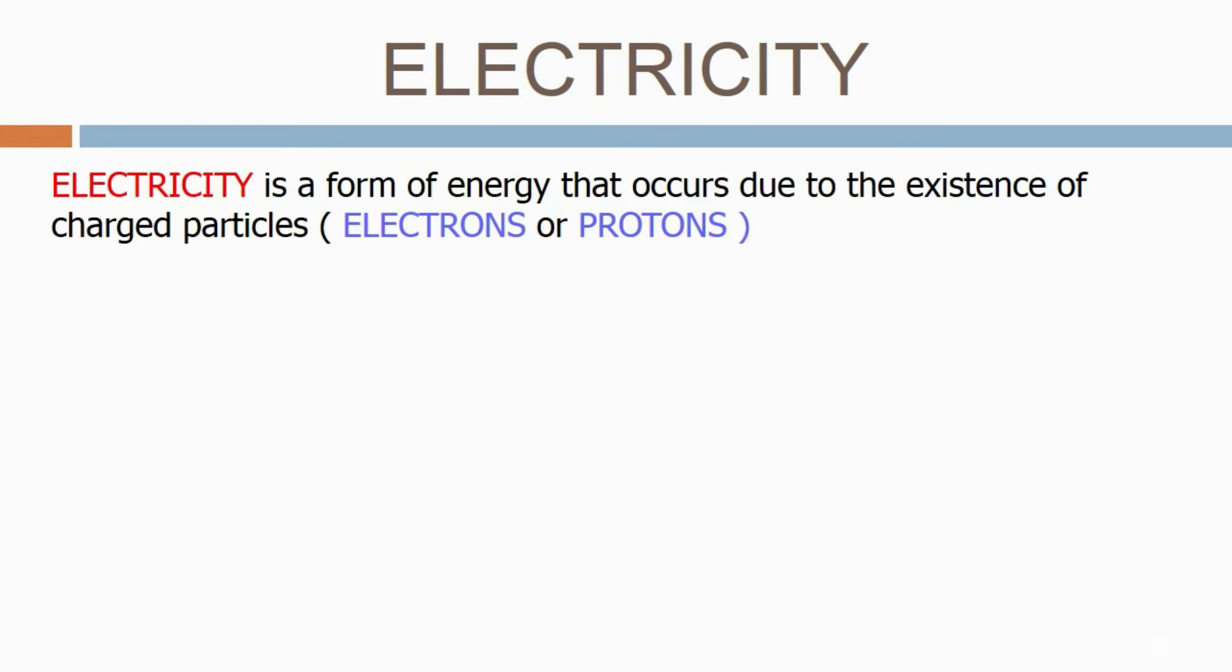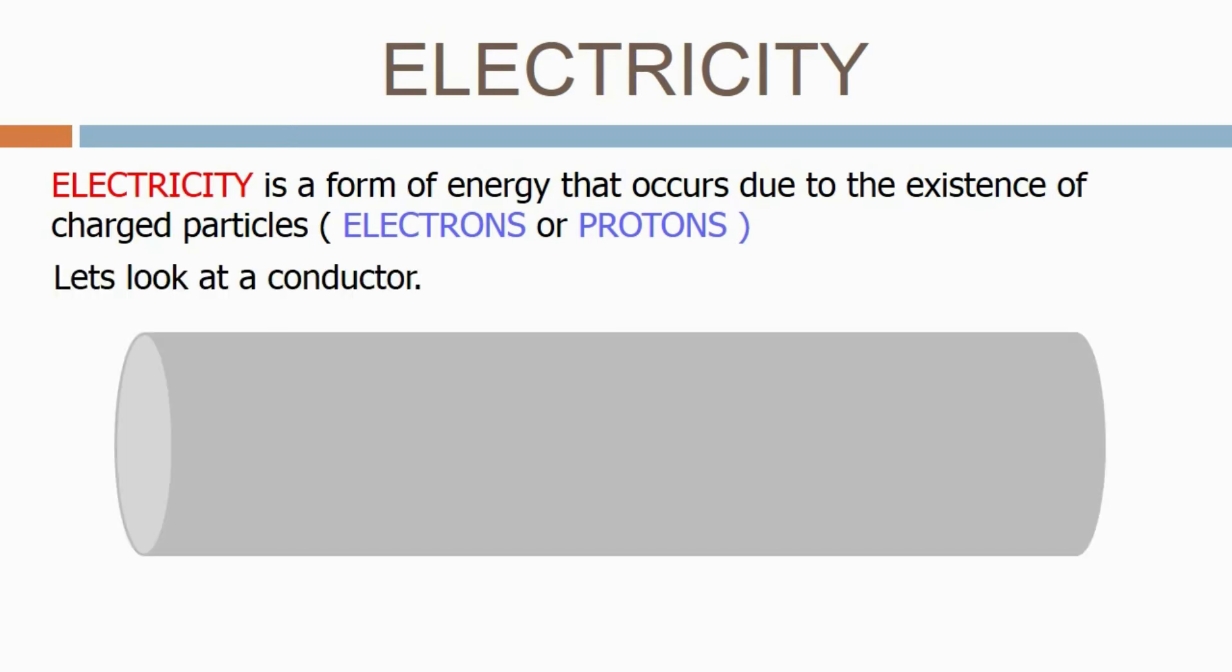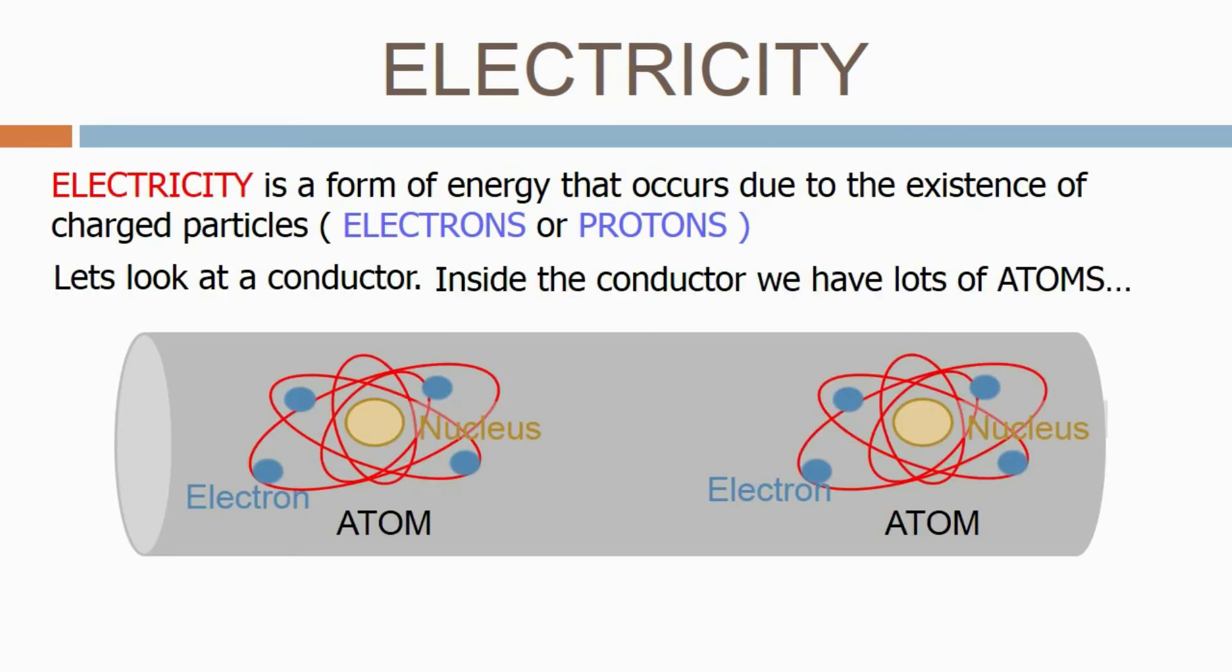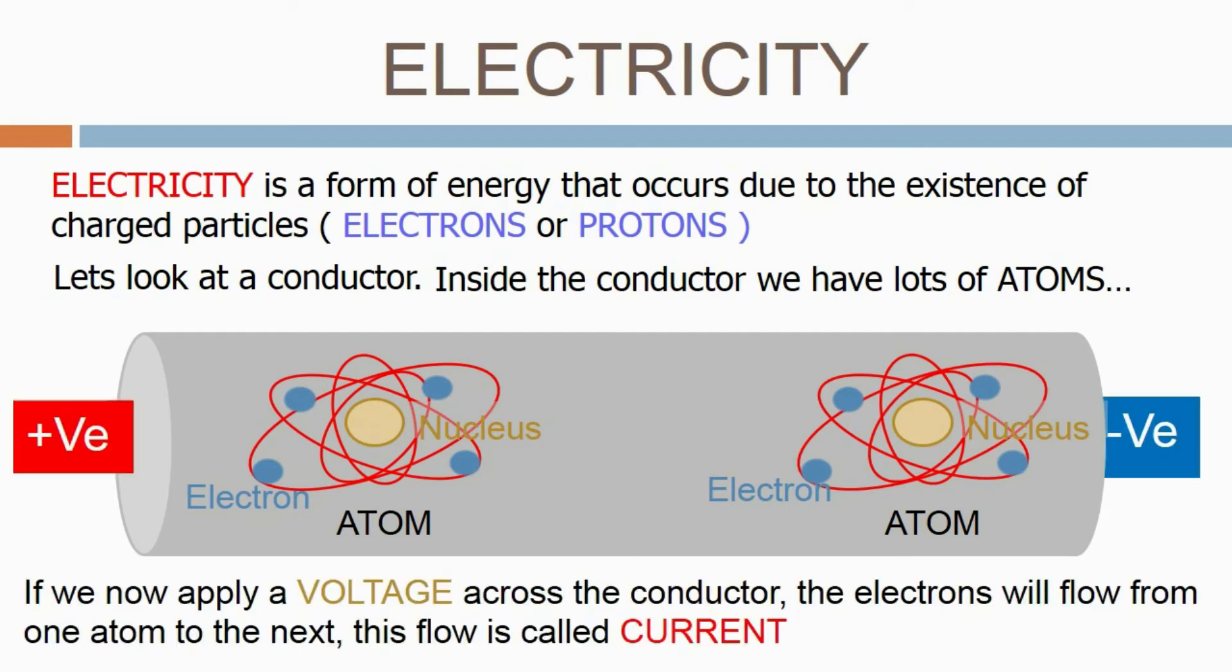Electricity is a form of energy that occurs due to the existence of charged particles, either electrons or protons. Let's look at a conductor. Inside the conductor, we have lots of atoms, either copper or aluminium atoms. If we now apply voltage across the conductor, the electrons will flow from one atom to the next. This flow is called current. The flow will continue as long as the voltage potential difference is there.